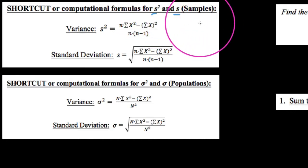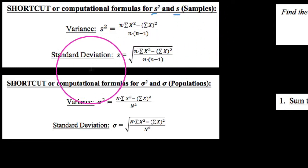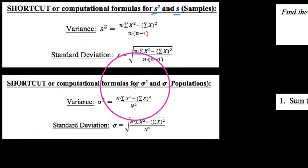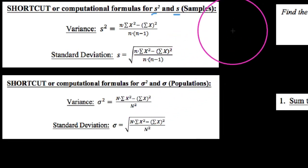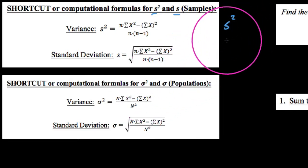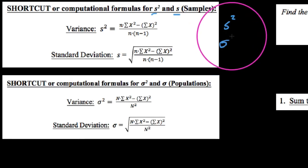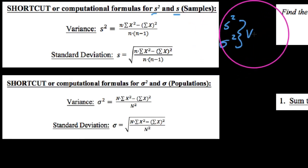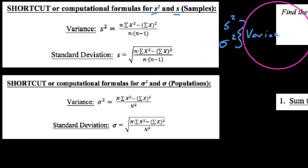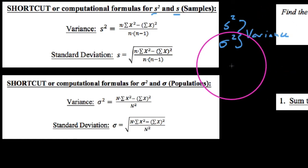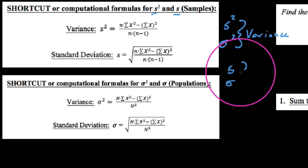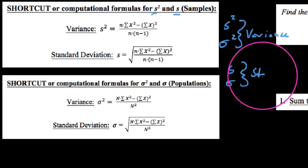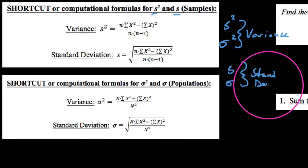Roman letters are like the alphabet we use in English, whereas when I talk about the shortcut formulas for populations, I use sigma squared and sigma. Recall that when we talk about S squared or sigma squared, these are both variance, and when we talk about S and sigma, we're talking about the standard deviation.